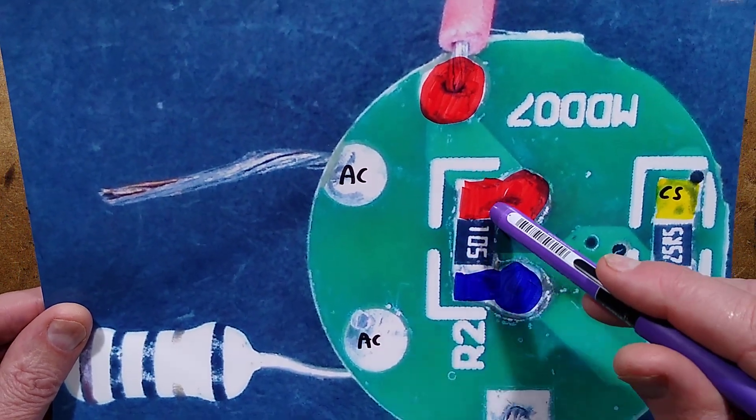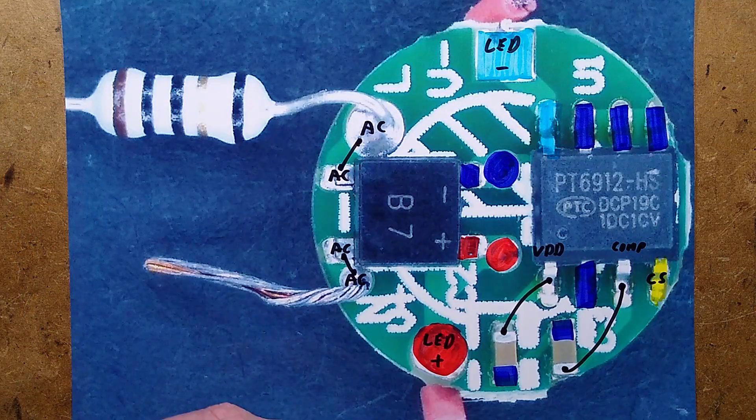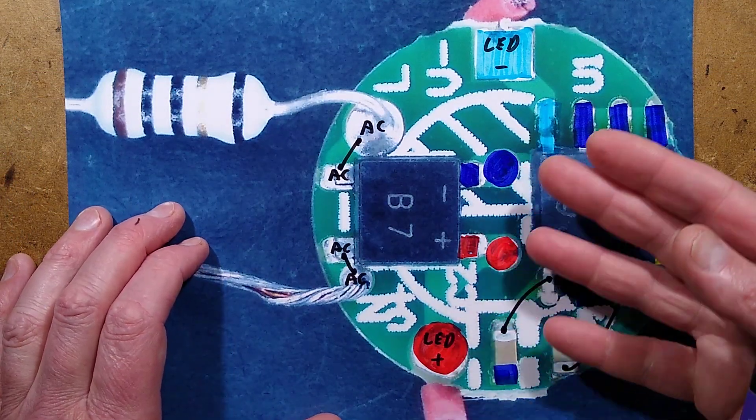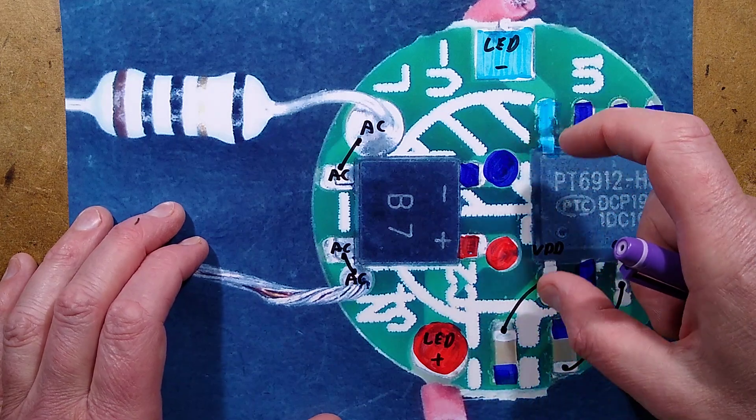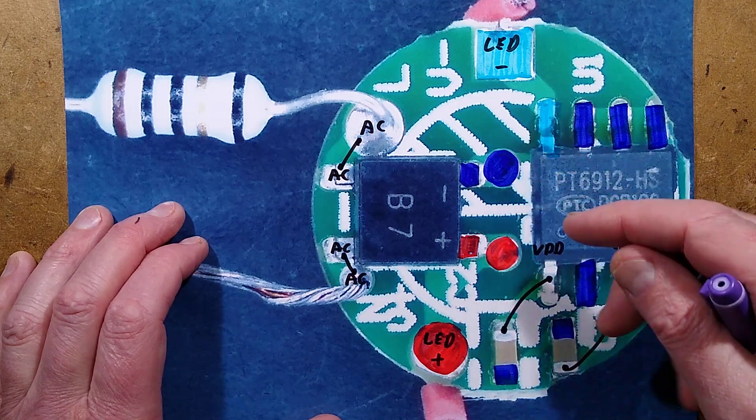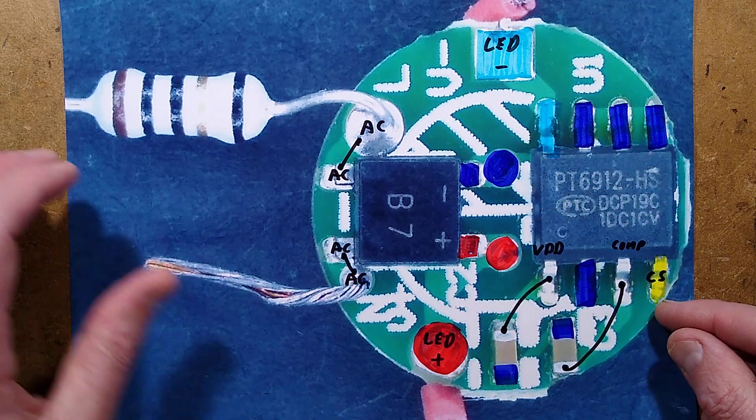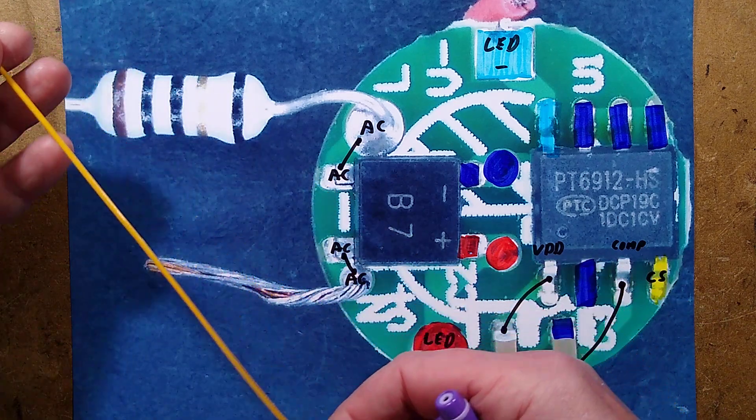There is a one megaohm resistor, 10510 and five zeros. It's on the other side and it's across the capacitor, and that is doing two things. It makes sure that when you turn it off it doesn't gently fade away for ages, and also there's a slight load at all times which means the capacitive coupling between switch wires won't cause ghost glowing of the LED.